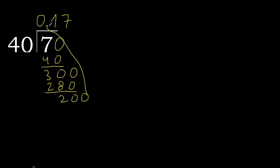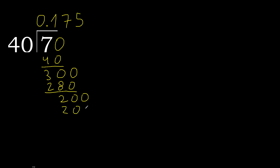0 point. The point is here. Bring down to get 200. 40 multiplied by 5 is 200 — it is not greater. Subtract: remainder is 0. Therefore finish. 7 divided by 40 equals 0.175.